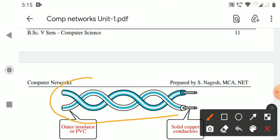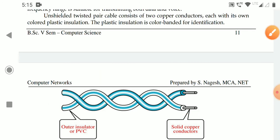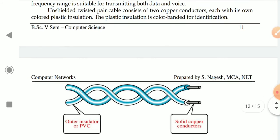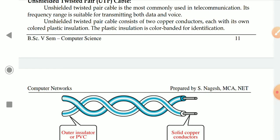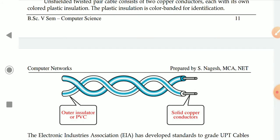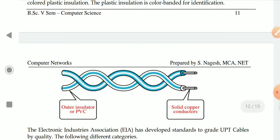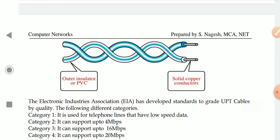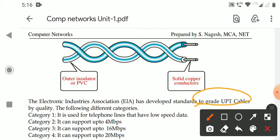The unshielded twisted pair cable consists of two copper conductors — this is one copper conductor, and this is another copper conductor — each with its own colored plastic insulation. There is a solid copper conductor covered with an outer insulator or PVC plastic. The Electronic Industries Association has developed standards to grade UTP cables by quality, resulting in different categories of UTP cables.